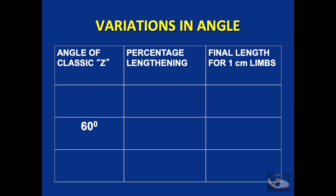We saw the classic Z-plasty where the angles are 60 degrees. When we have 60-degree angles, the percentage of lengthening achieved is 75 percent — that is, there will be an increase of 75 percent in the original length. So if the original length had been 1 centimeter, it would now be 1.75 centimeters. If we plan the angle at 45 degrees instead of 60 degrees, we would get a lengthening of 50 percent, meaning a 1-centimeter original length would become 1.5 centimeters.